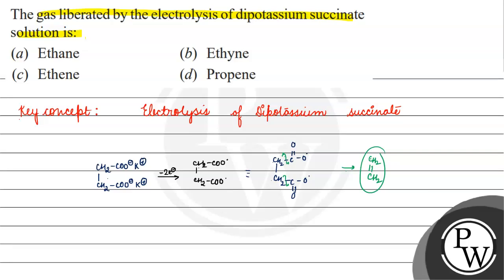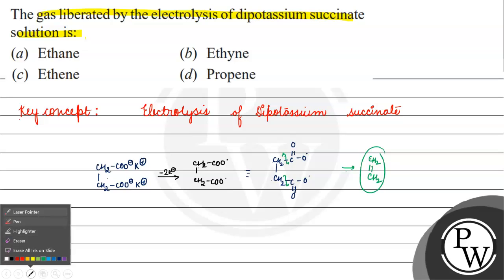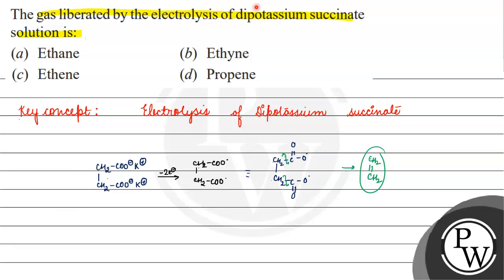Ethene is produced. If we have electrolysis of dipotassium succinate, ethene will be formed. The correct answer for this question is option C. I hope you understood it well. Thank you and all the best.